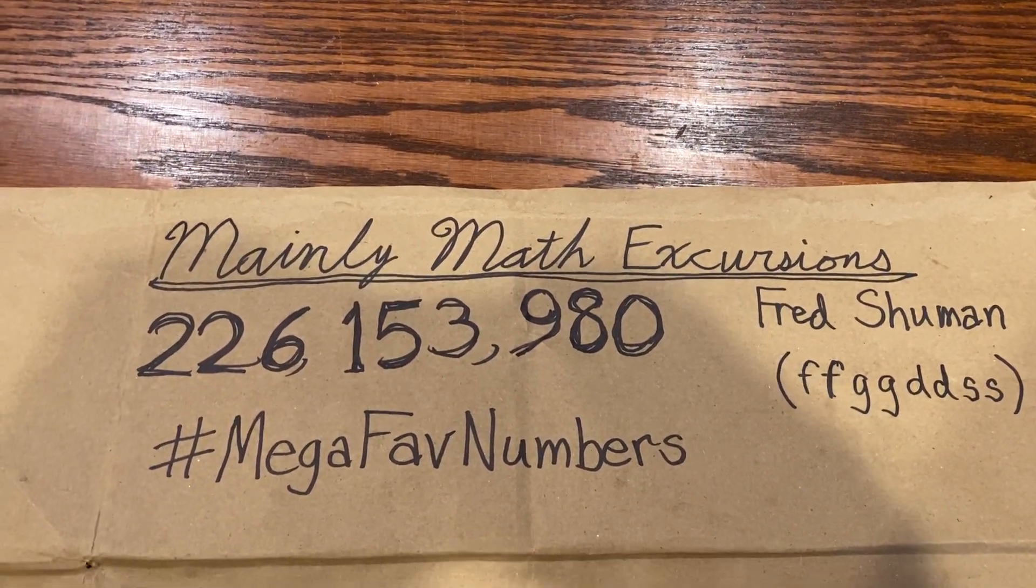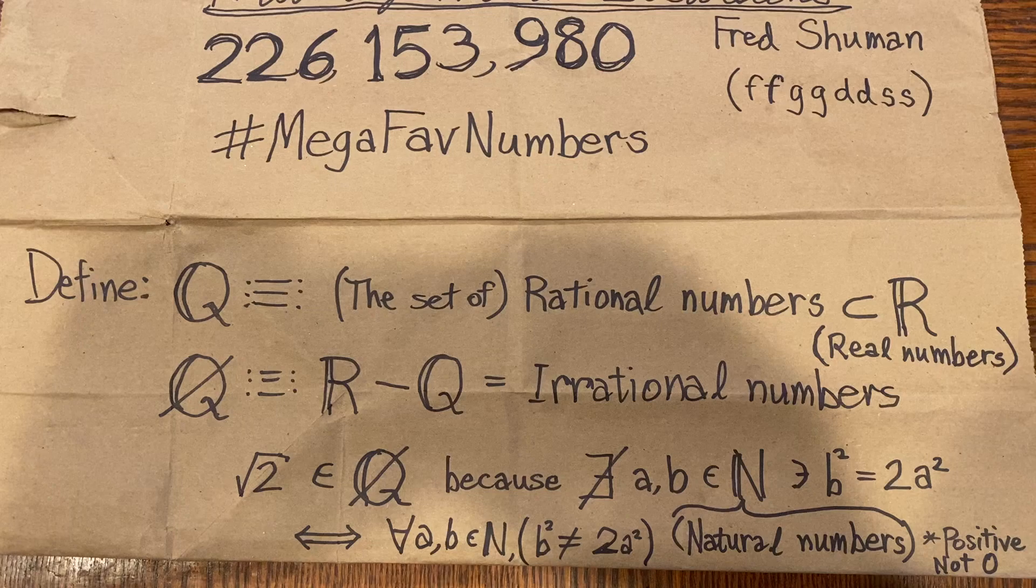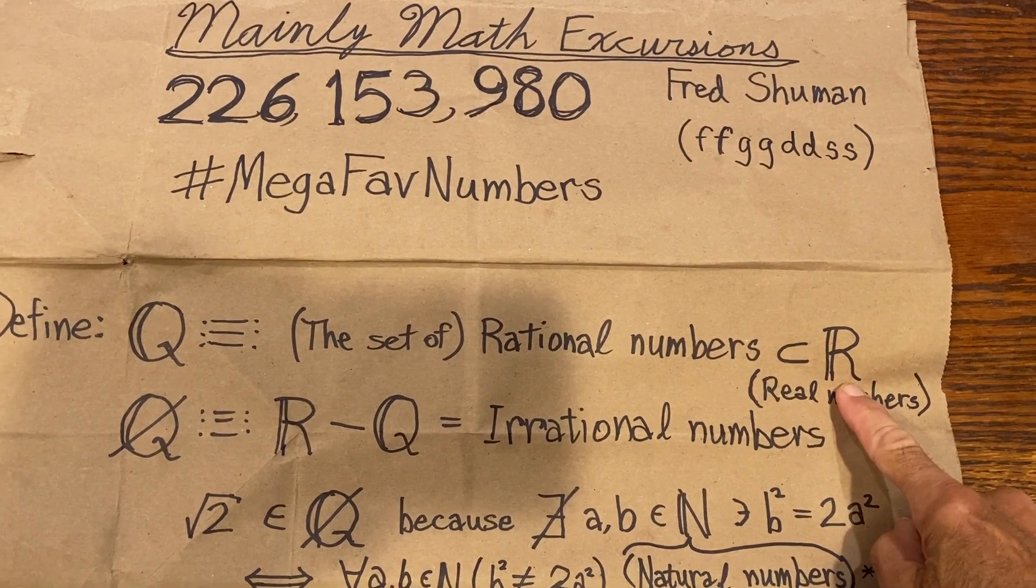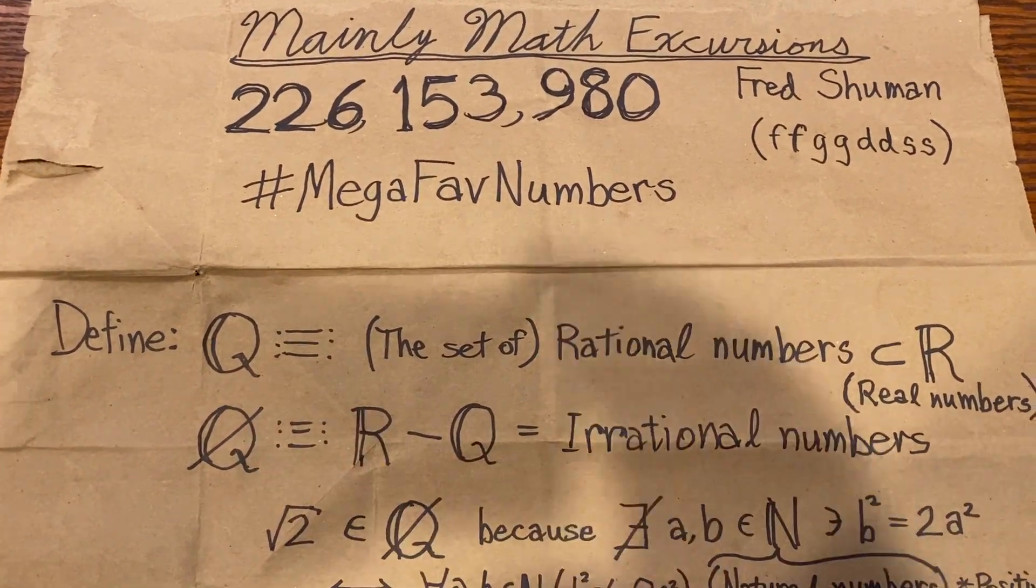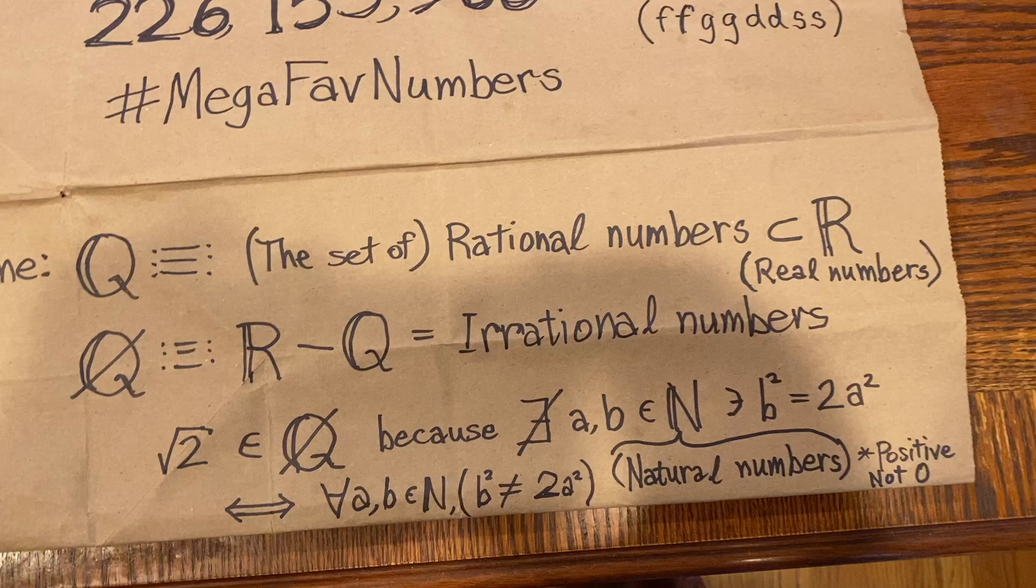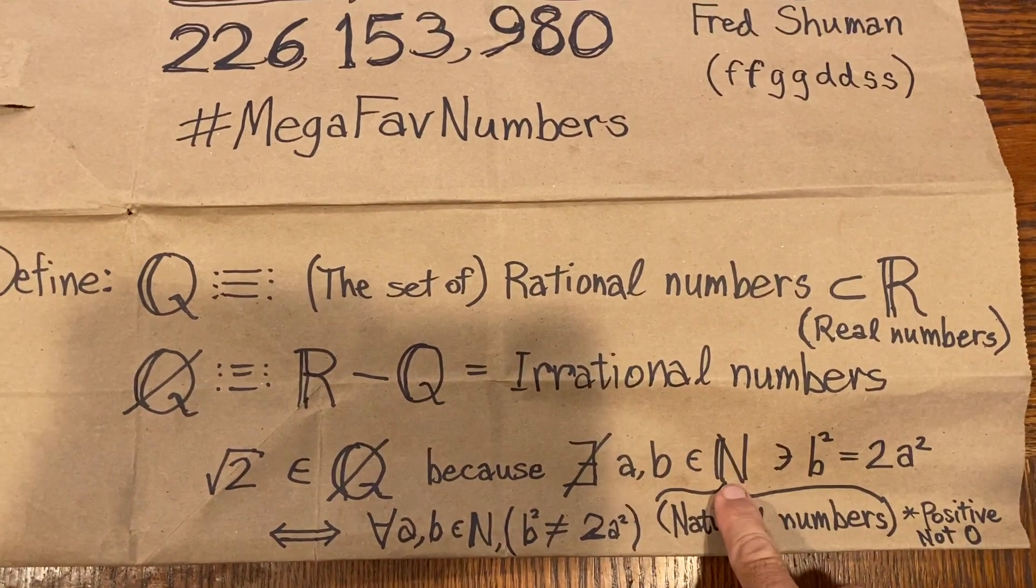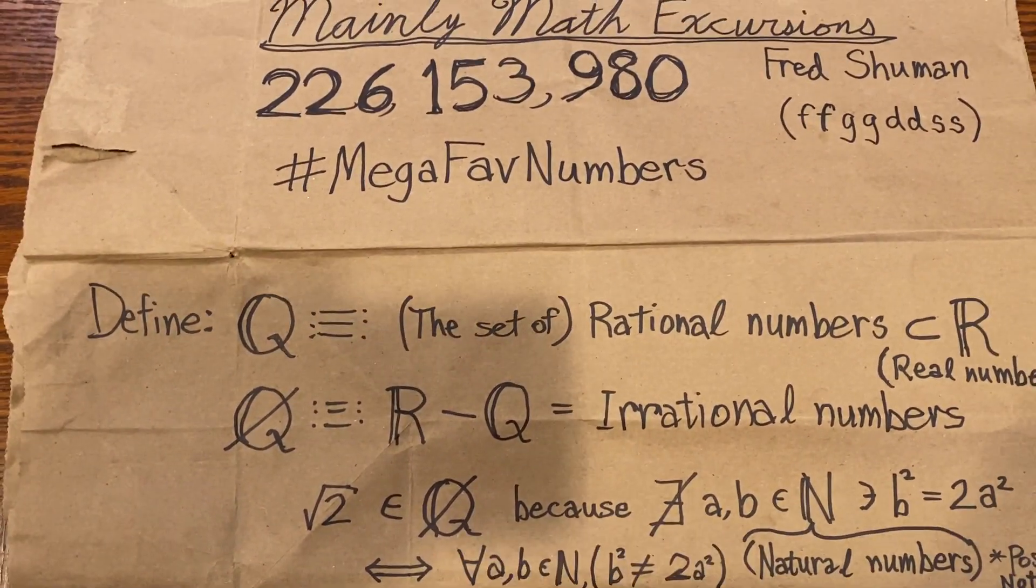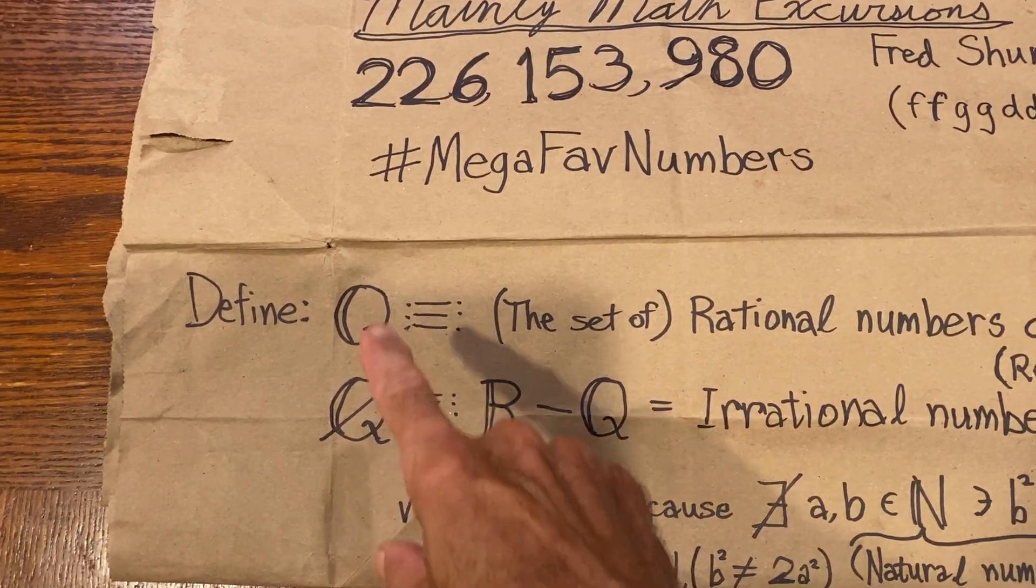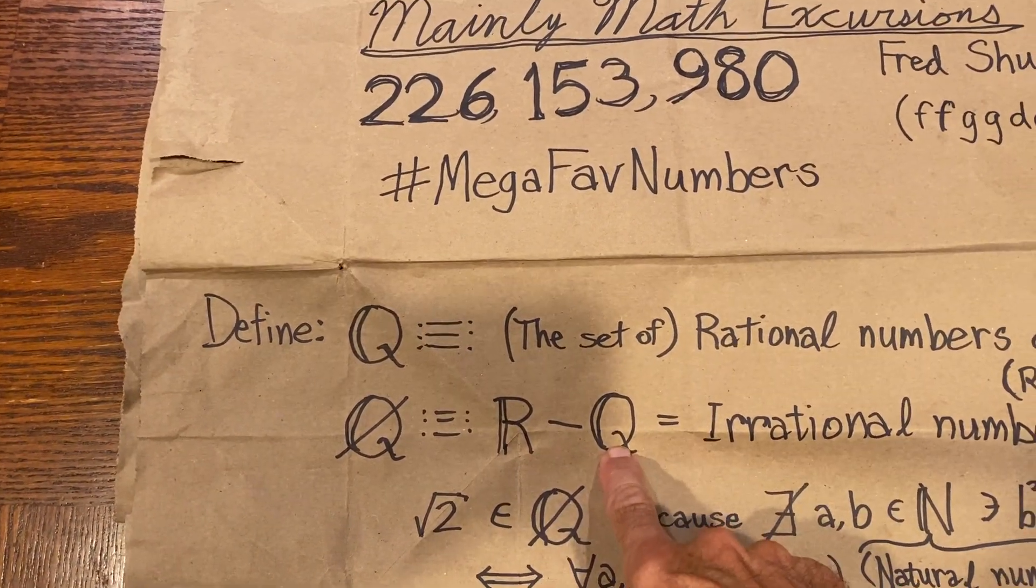Okay, let's start with some definitions. In math, we have some names, some letters, for important sets of numbers. R denotes the real numbers. Q, for quotient, denotes the rational numbers. N denotes the natural numbers. And sometimes that includes zero, sometimes it doesn't. I'm excluding zero. Zero is not in my natural number set. We can also define Q slash, which is the set complement of Q. That is, it's the irrational numbers because it's the real numbers with all the rational numbers removed.